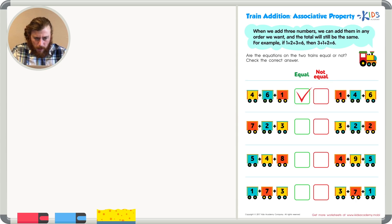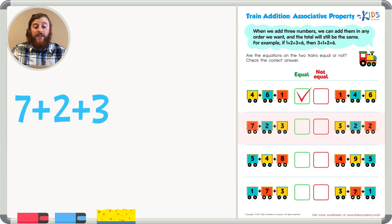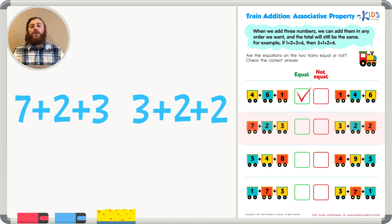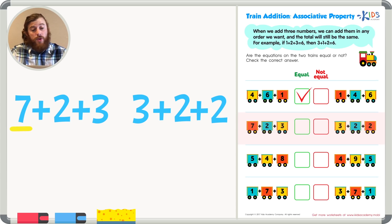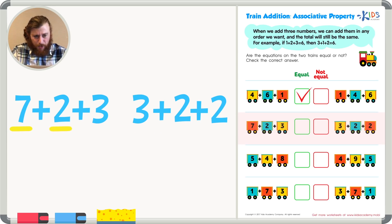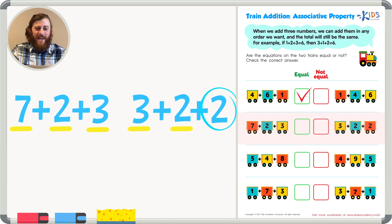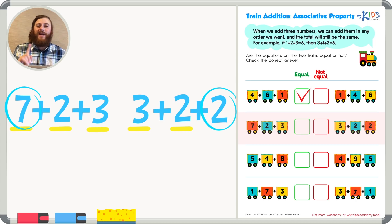Let's check out the next example. In our first train we have 7 plus 2 plus 3. In the second train we have 3 plus 2 plus 2. Remember, the associative property says that if the numbers are the same, you can add in any order that you want. So let's see if the numbers are the same. In the first train we have a 7, and already I see that there's no 7 in the second train, so I'm beginning to think that these two trains are not equal. I see a 2 and a 3 in the first train, and a 2 and a 3 in the second train, but the difference is there's a 2 in this train and a 7 in this train. We can add these numbers together to be sure, but I'm already thinking these two trains are not equal to each other.